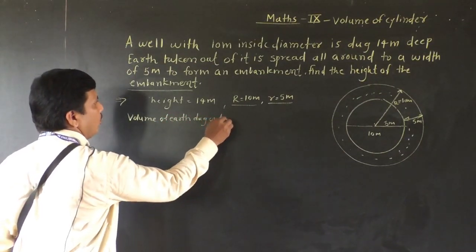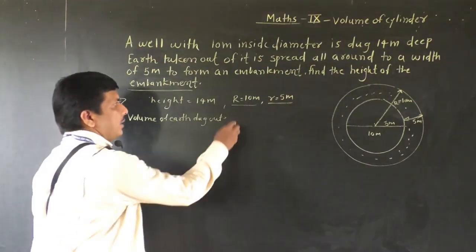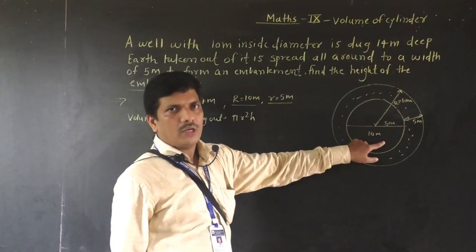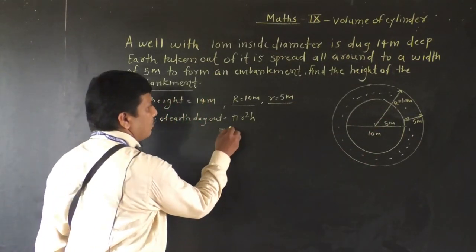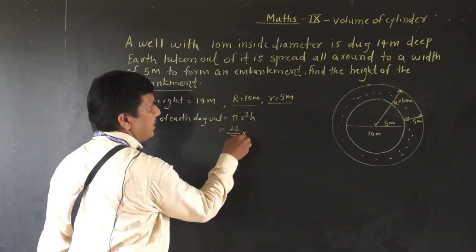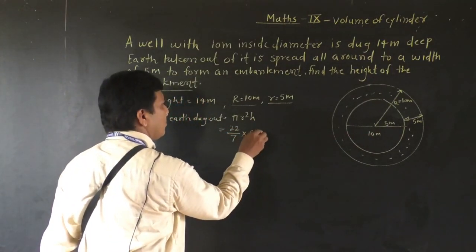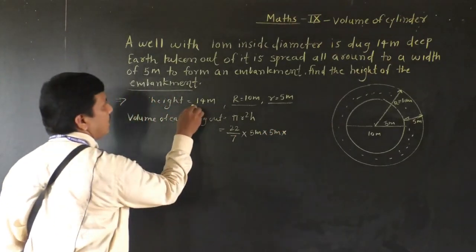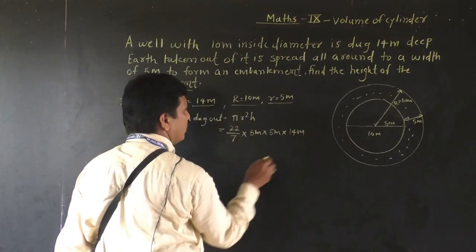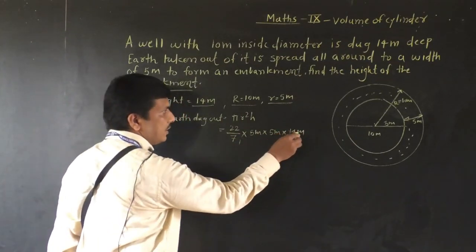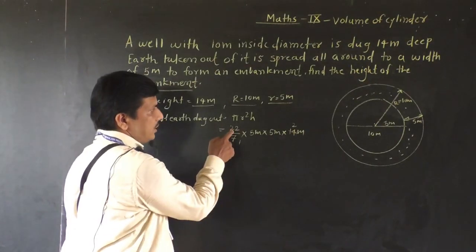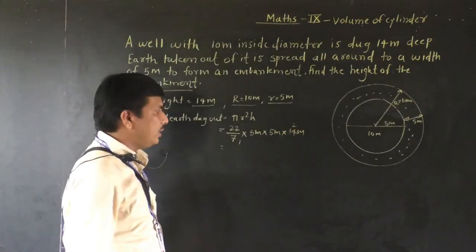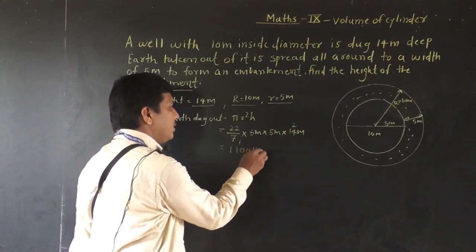Volume of earth dugout equals π times r² times h. So that is 22/7 times 5 times 5 times 14. Cancelling 7 into 14 gives 2, so 22 times 25 times 2 equals 1100 cubic meters.